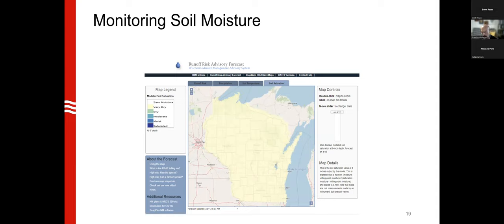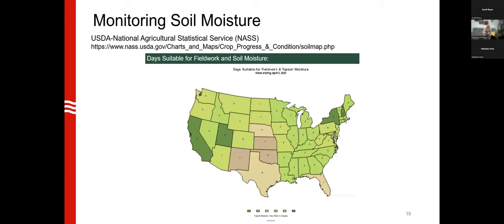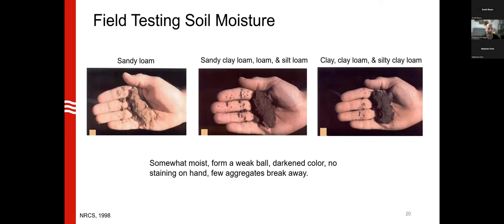Perhaps more useful is the NASS product looking at suitable days for field work and soil moisture conditions. The legend ranges from very short to surplus topsoil moisture. It's a general ranking, but it gives an idea of what's happening across the country. For field-level management it's not always highly useful, but it's worth highlighting. Better data products are coming — there are many scientists working on this type of monitoring.